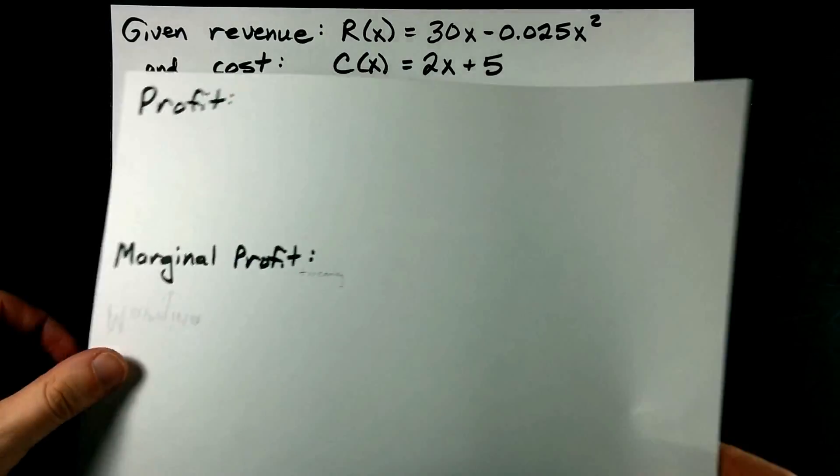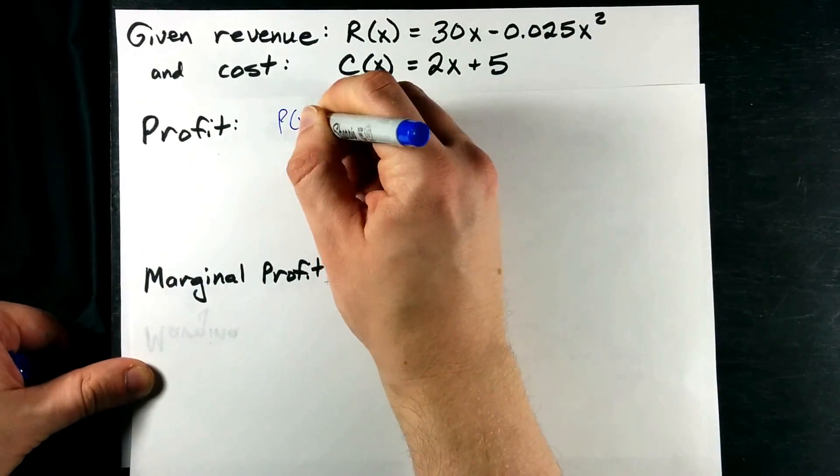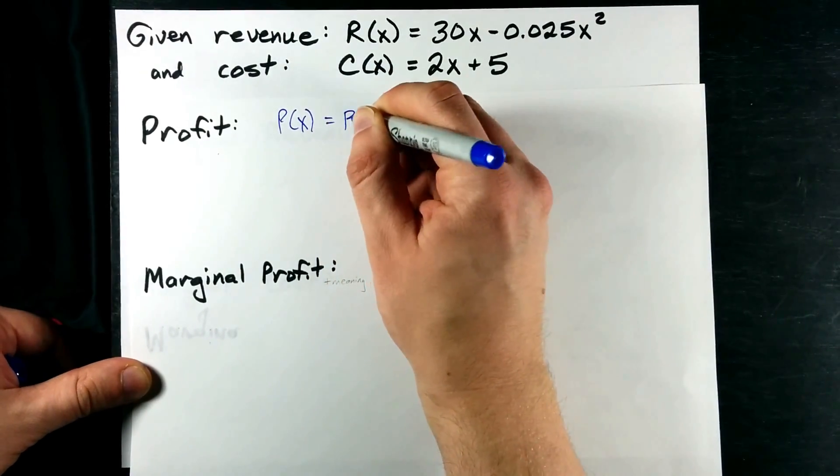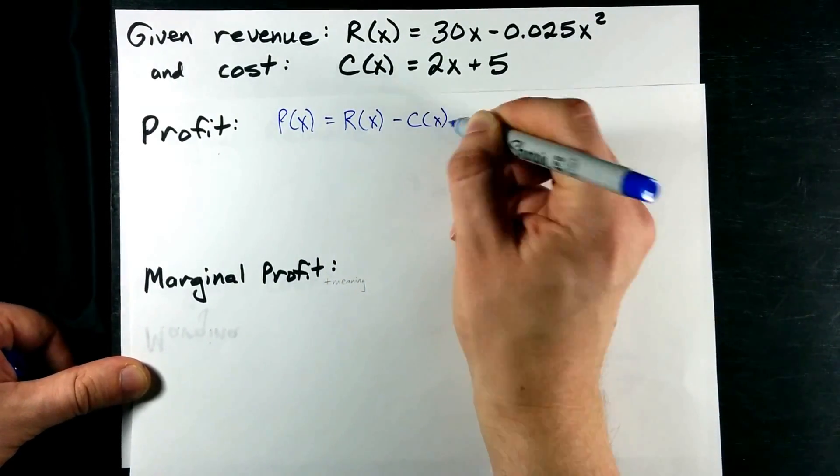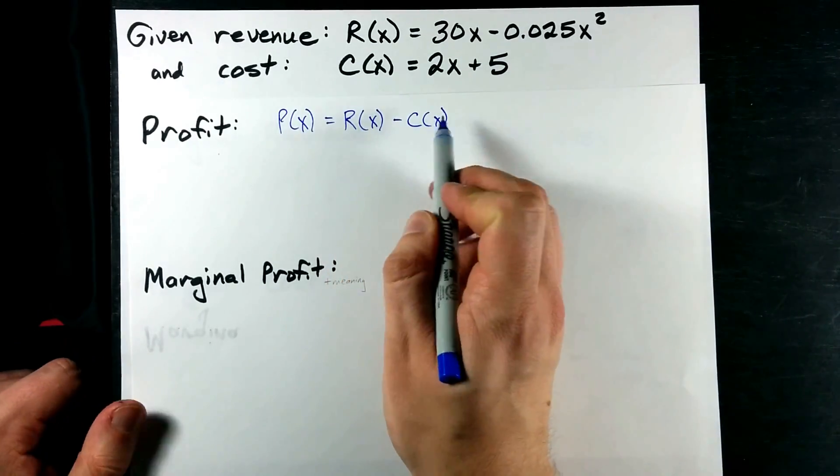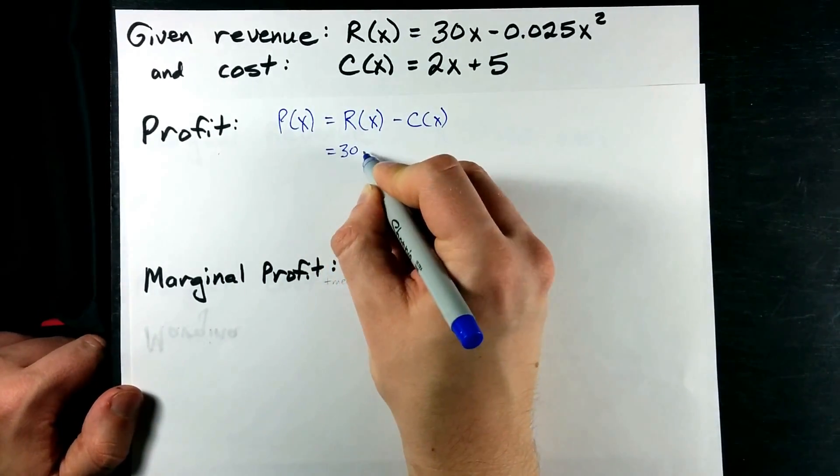Now, here comes the more interesting bit, if you ask me. Profit. Profit, which I'm going to call P, is, if you know anything about economics, revenue minus cost. It's the amount of money you're bringing in minus all your expenses. So, I'm actually going to have to plug these functions in.